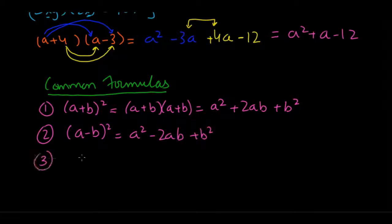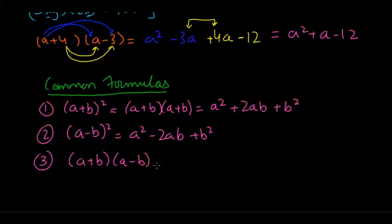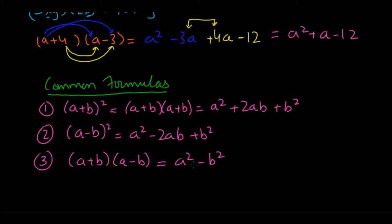The third formula is (a + b) times (a - b), and this gives you a squared minus b squared. You can expand out these brackets and prove it to yourself that when you multiply everything out you'll get the right-hand side. This needs to be memorized very well.